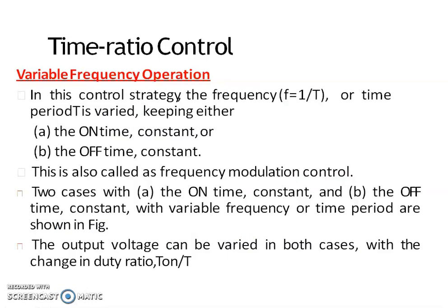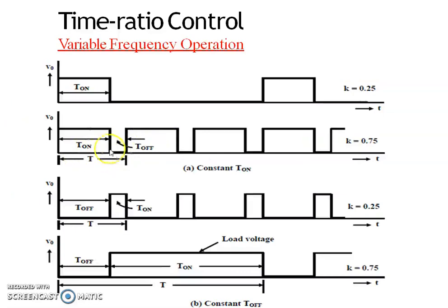The second type is variable frequency control. In this scheme the chopping frequency f is varied — we are varying the chopping frequency and thereby varying the total time period. Either the on time can be kept constant or the off time is kept constant.